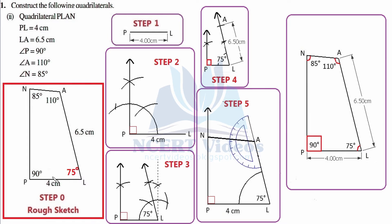We have now jotted down all the given information on the rough sketch. Using this rough sketch we will construct our final diagram with actual measurements. Step number one: we construct line segment PL using a ruler, equal to 4 centimeter, and jot down its vertices as P and L. Pause and try to construct it yourself.